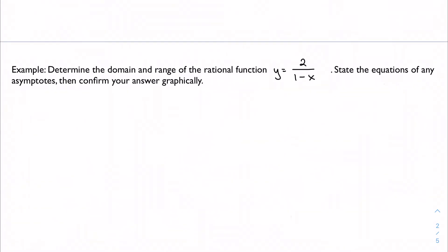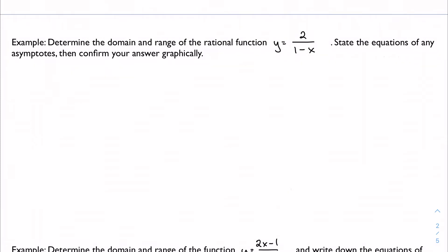Let's look at some examples. I want to determine the domain and range of this rational function, state the equations of any asymptotes, and confirm your answer graphically. We're going to do this a little bit out of order. Let's start with the equations of the asymptotes because this tends to guide the way we think about domain and range. My vertical asymptotes are essentially the x values I cannot plug into my function. In this case, that would be x equals 1. Easy, done, moving on.